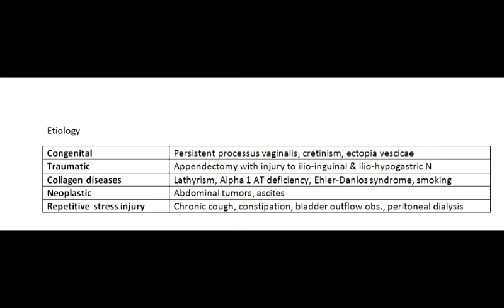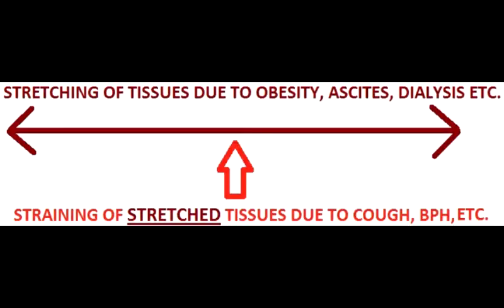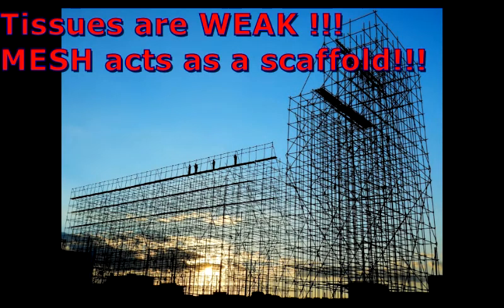Collagen diseases such as lathyrism, alpha-1 antitrypsin deficiency, and Ehlers-Danlos syndrome — even smoking can predispose to a hernia. Increased intra-abdominal pressure as occurs with abdominal tumors and ascites may predispose to hernia. Repetitive stress injury such as chronic cough, constipation, bladder outflow obstruction, or peritoneal dialysis, where the muscles and fascia get stretched — every time one coughs or strains there is repetitive stress, and the tissues are weak, so using a mesh to reinforce the repair is a good idea.